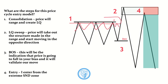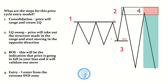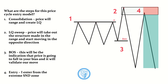In step two, after we have the tight consolidation and the relative equal highs made, with all that liquidity resting above, price will come up, take out this liquidity and all of these equal highs, and then start to move in the opposite direction. That is phase two of this price cycle entry model. Phase three is the break of structure, which will be the indication that price is falling into my bias and will validate our move.